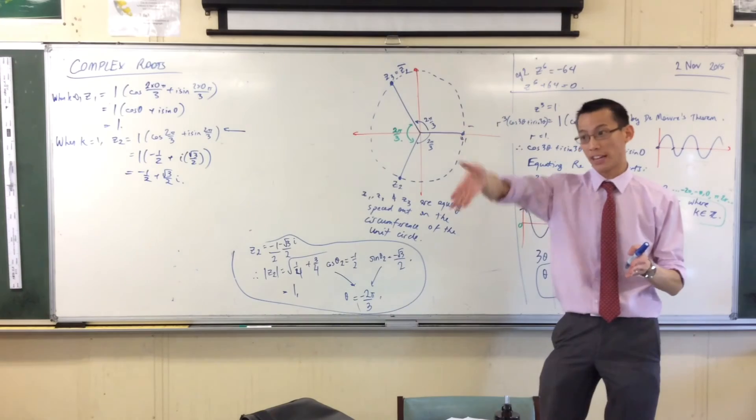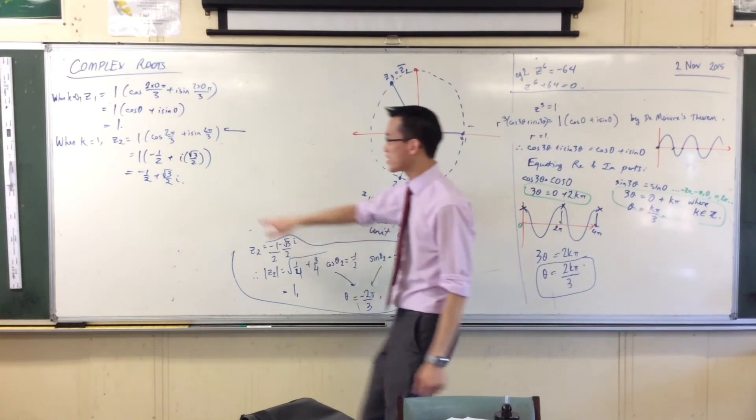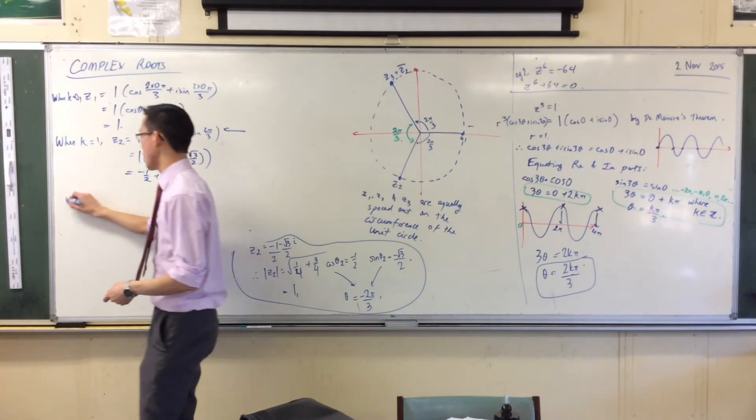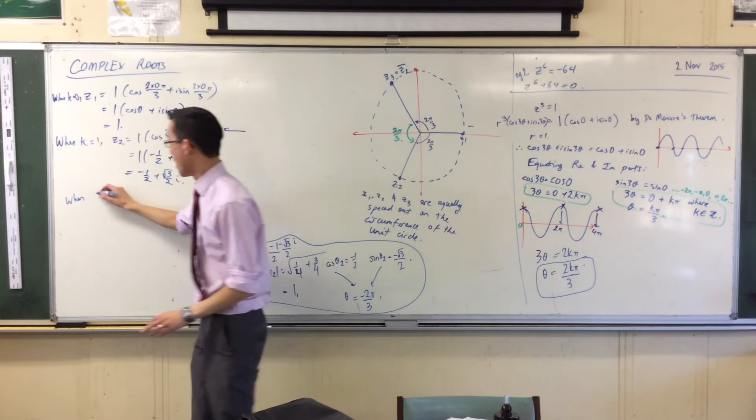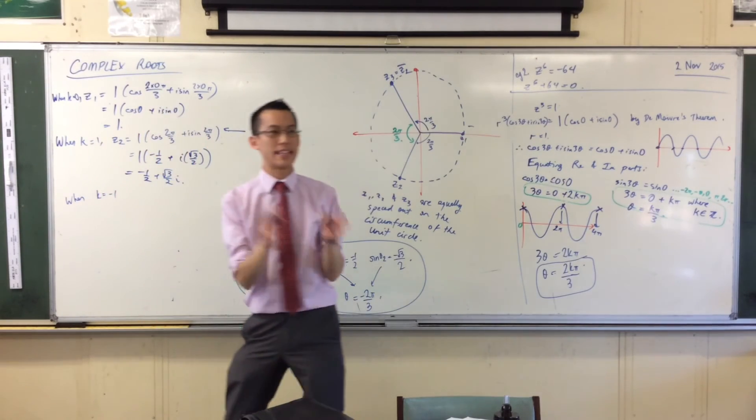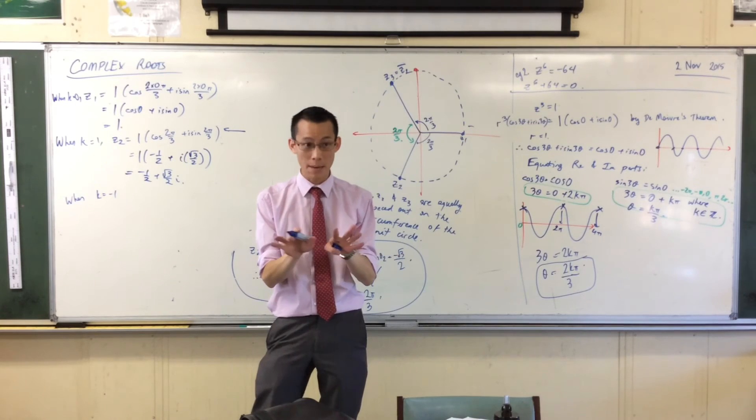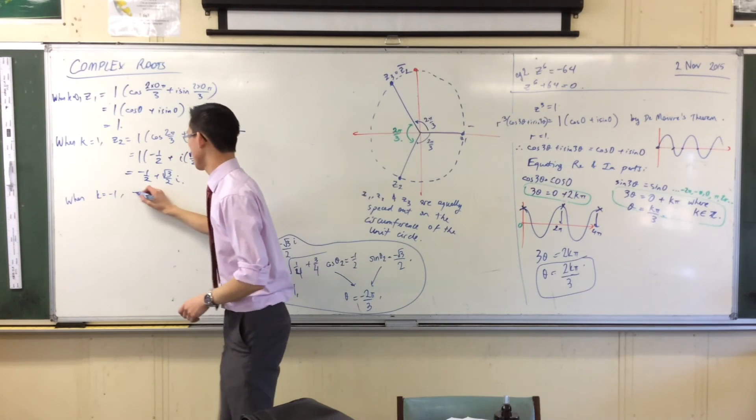See that? Because the principal argument goes from negative pi to pi. So once I've gotten this far, then I immediately say, well, forget going in the positive direction. I might as well go in the other direction so I can stay within the principal argument's domain. Does that make sense? So I'm going to get this. Z3.